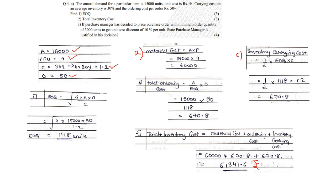Now for part three, the purchase manager has decided to place the order with a minimum order quantity of 3,000 units — meaning the new EOQ is 3,000 units. At this quantity, a cost discount of 10% per unit is given. The original unit cost was 4 rupees. We need to assess whether this decision is justified. If the new total inventory cost is less than 61,341.6, then the decision is justified.